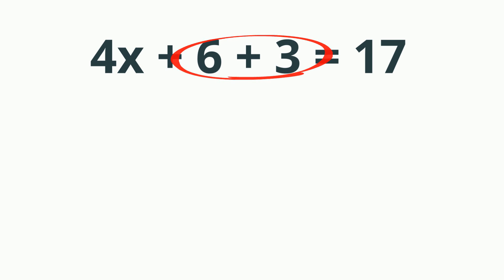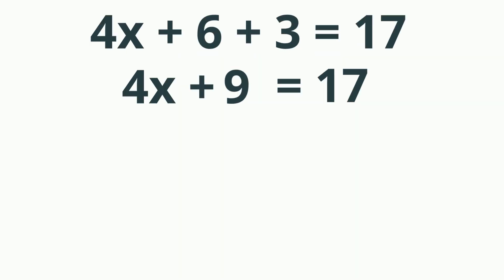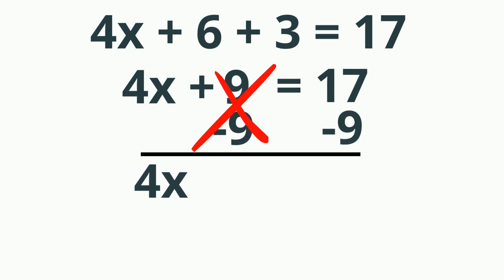So I have 4x plus 9 equals 17. I need to get the variables on one side and the constants on the other. So I can isolate 4x by subtracting 9 from both sides, bring down the 4x, and 17 minus 9 equals 8.